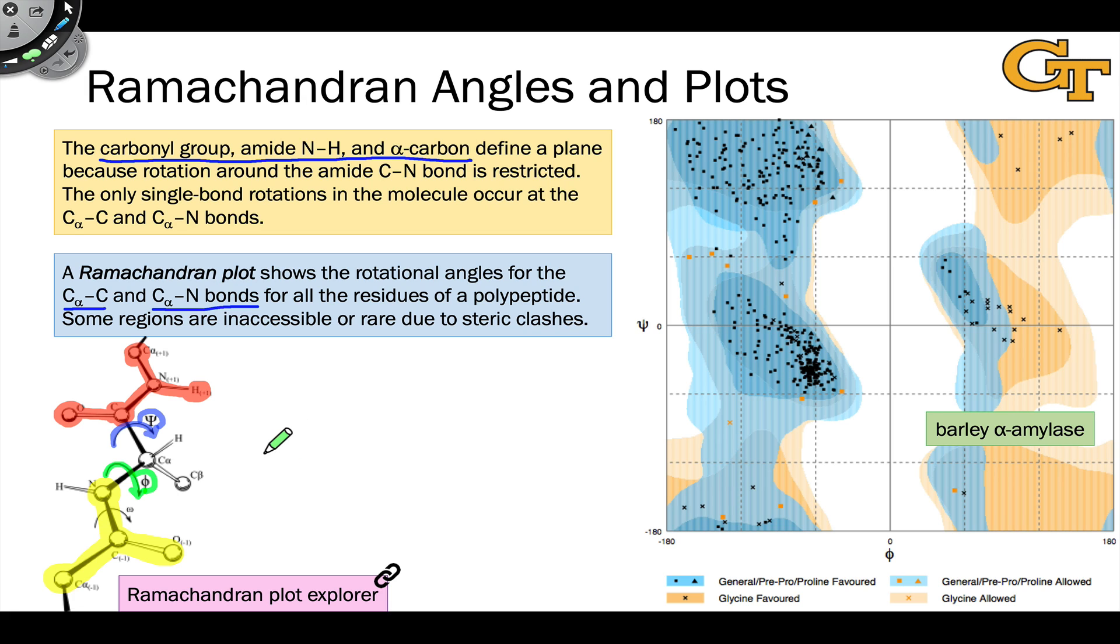In doing that for the full set of residues in a polypeptide, in other words, in getting a full set of phi and psi values for all of the residues in a polypeptide chain, we can generate a graph with a large number of points. Each point on this graph corresponds to an amino acid residue in the polypeptide chain.